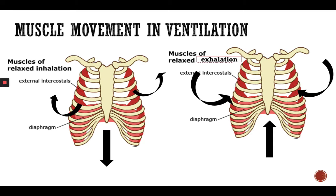During exhalation, the internal intercostal muscles contract and the rib cage shrinks, and the diaphragm goes up, removing the cavity for the lungs and letting the lungs come back to their resting state.